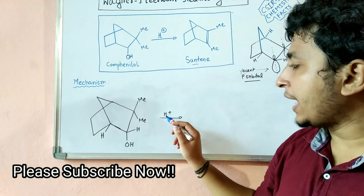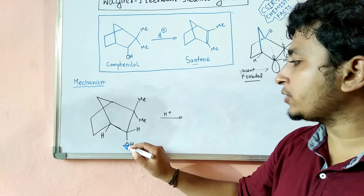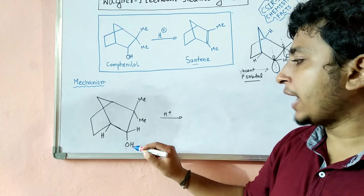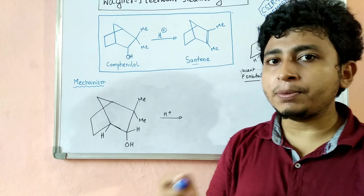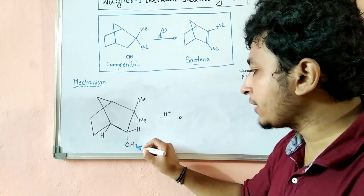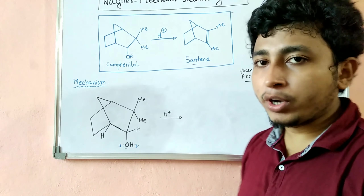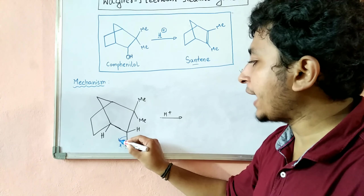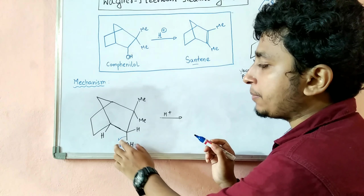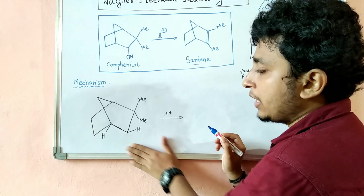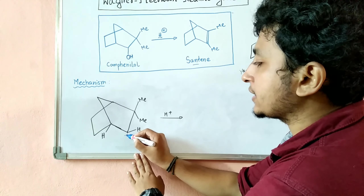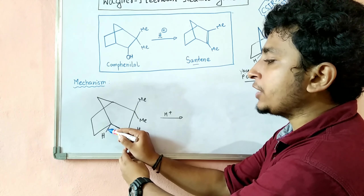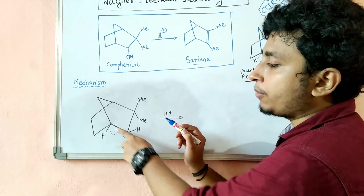This is the starting material and it will be treated with H+. The oxygen has lone pairs, and this lone pair can donate to H+, protonate it, and form OH2+. OH2+ is a very good leaving group, and therefore it can leave, placing a positive charge on this carbon — forming a carbocation.